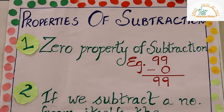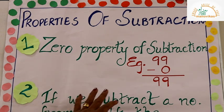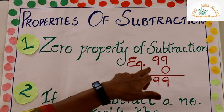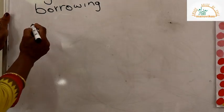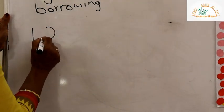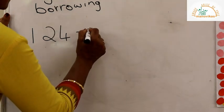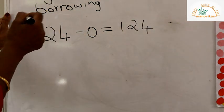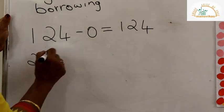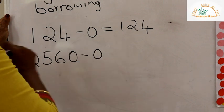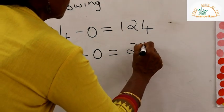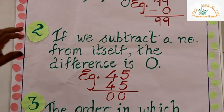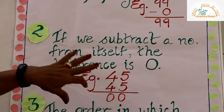The zero property says: whenever you subtract zero from a number you get the same number. For example, 99 minus 0 gives 99. Another example: 124 minus 0 gives you 124. Similarly, 2560 minus 0 gives the same number 2560. This is our first property — the zero property of subtraction.